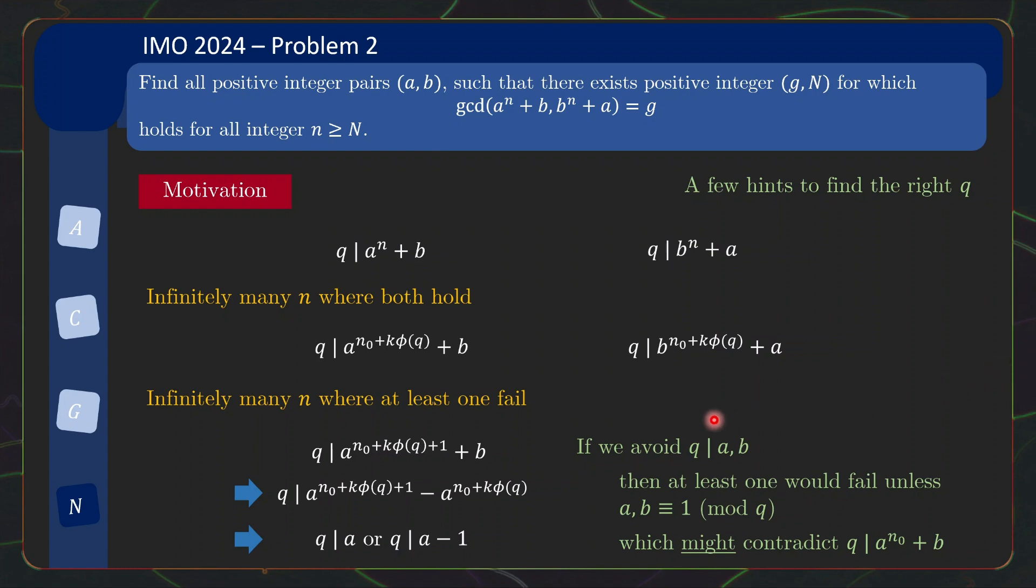For one thing, you want q to be coprime with a and b. And also, we talked about how this thing will be a contradiction unless q = 2, and you recall that (1, 1) is a solution. So the q = 2 might correspond to the scenario where (1, 1) is a solution.